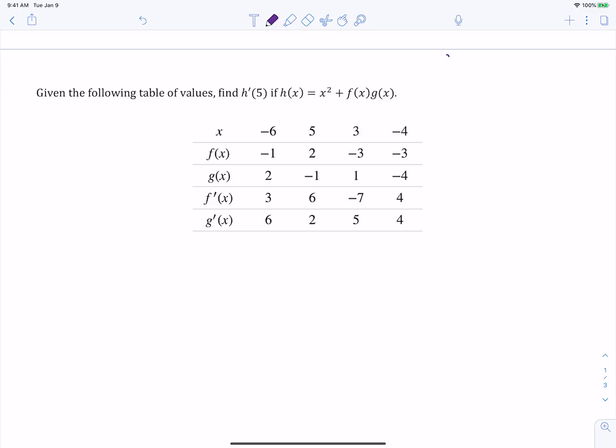So again, that product rule is the derivative of f times g plus the derivative of g times f. So this is asking us about the function h(x), which is a combination of a regular function, x², and then the product of two functions f and g, which we don't know what those equations are, but we have this whole big table here that gives us information about f and g at particular points and their derivatives at particular points.